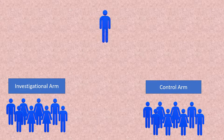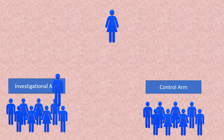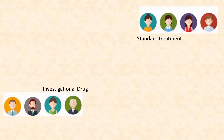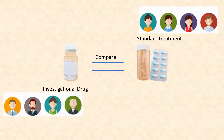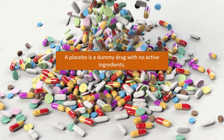Study volunteers are assigned to either the investigational arm or to the control arm. Clinical trials aim to compare an experimental drug with an already existing standard treatment, or with a placebo if no standard drug is available. A placebo is a dummy drug with no active ingredients.